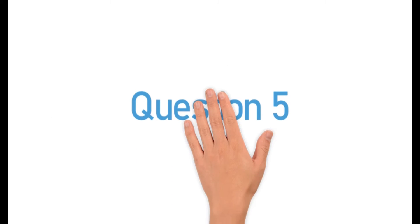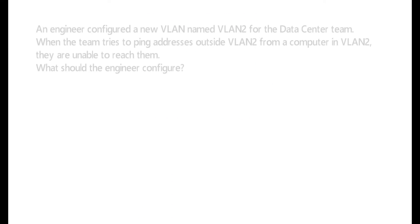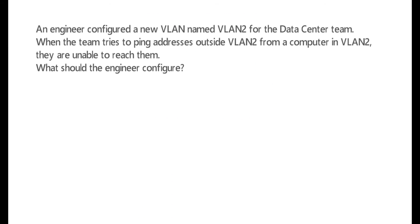Question five: an engineer configured a new VLAN named VLAN2 for the data center team. When the team tries to ping addresses outside VLAN2 from a computer in VLAN2, they are unable to reach them. What should the engineer configure?